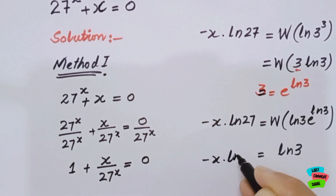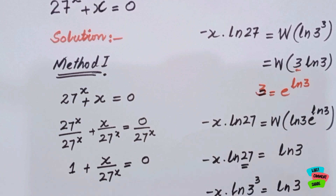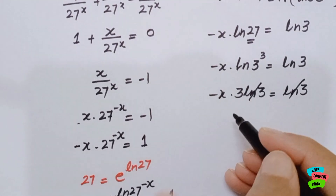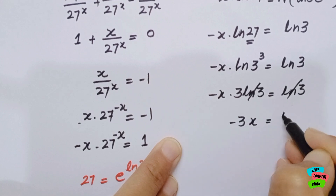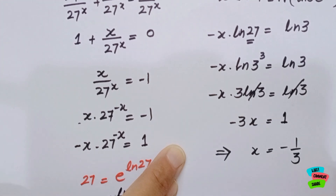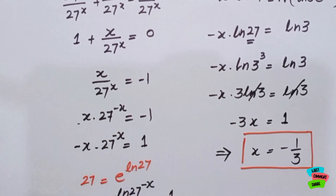From here, minus x times ln 27. We write 27 as 3 to the power 3, so ln 27 becomes ln(3³). Using the log property we bring the 3 to the front: minus x times 3 ln 3 equals ln 3. The ln 3 cancels on both sides, giving us minus 3x equals 1, and therefore x equals minus 1 over 3. That is the value of x and the answer to our question.